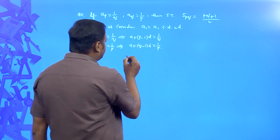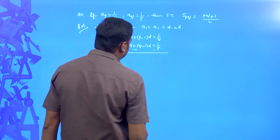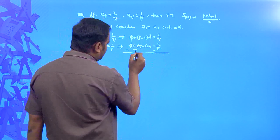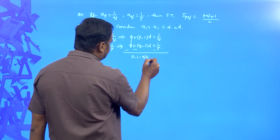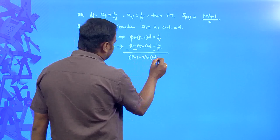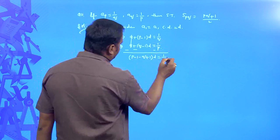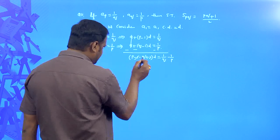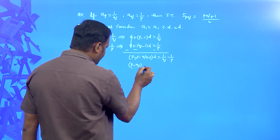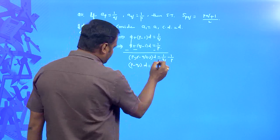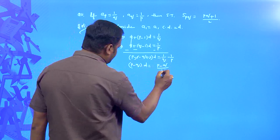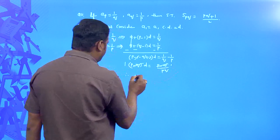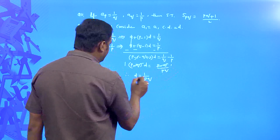In order to solve for a and d, subtract the second equation from the first. The a terms cancel. We get (p − 1) − (q − 1) into d = 1/q − 1/p, which simplifies to (p − q)d = (p − q) / pq. The (p − q) factors cancel, therefore the value of d is equal to 1 / pq.